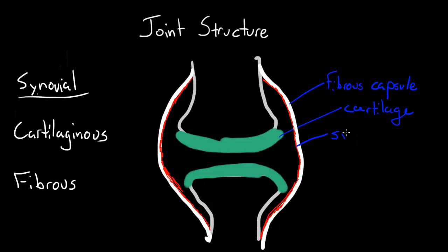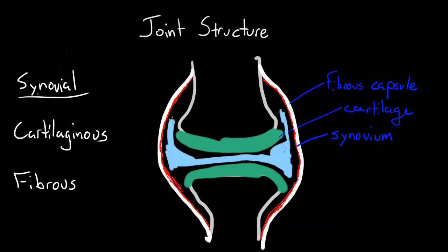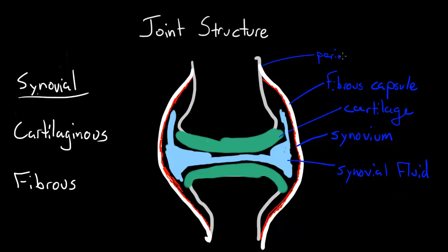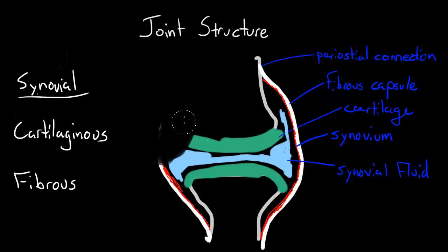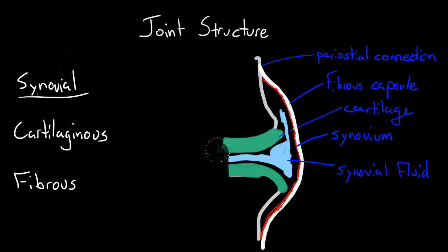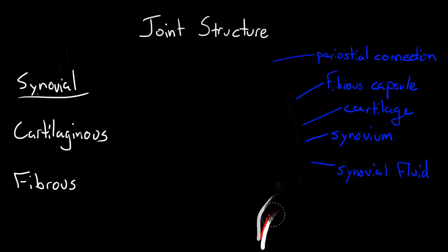There may be ligaments that make up the outer capsule as well. Overall, this setup allows for a large degree of mobility of the two articular surfaces, though the shape of the bones will limit motion in some ways. That limitation of motion can further subcategorize the synovial joints.